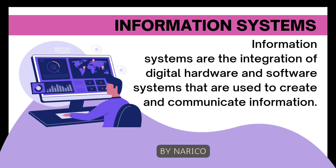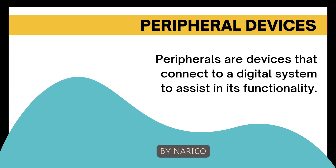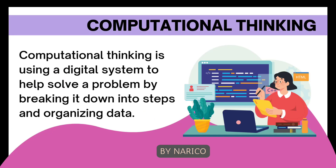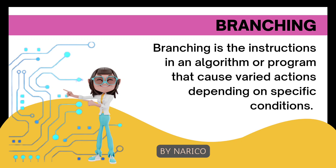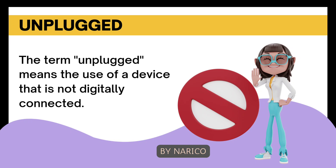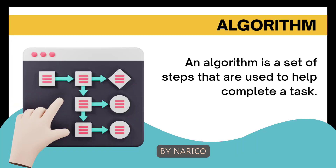Information systems are the integration of digital hardware and software systems that are used to create and communicate information. Peripherals are devices that connect to a digital system to assist in its functionality. Computational thinking is using a digital system to help solve a problem by breaking it down into steps and organizing data. Branching is the instructions in an algorithm or program that cause varied actions depending on specific conditions. The term unplugged means the use of a device that is not digitally connected. Computer coding is the set of instructions that tells computer software what to do. An algorithm is a set of steps that are used to help complete a task.